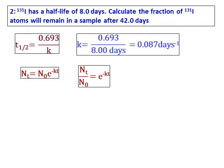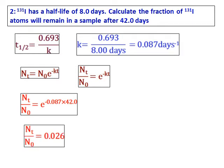Here, since they have just asked the ratio of Nt over N0, substitute the values of k and t and get the ratio of Nt over N0, which comes as 0.026. If you want to express it in terms of fraction, it is 1 over 39.